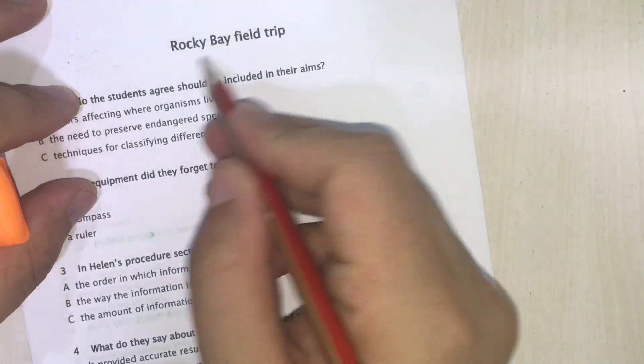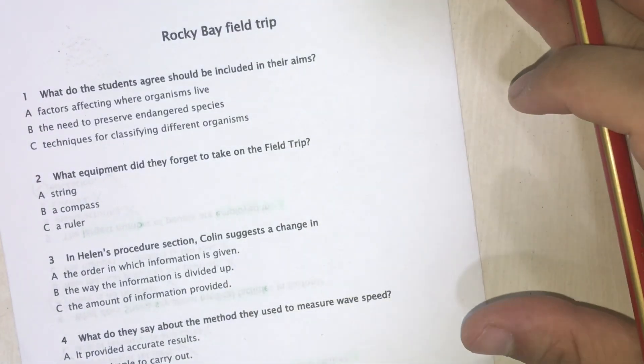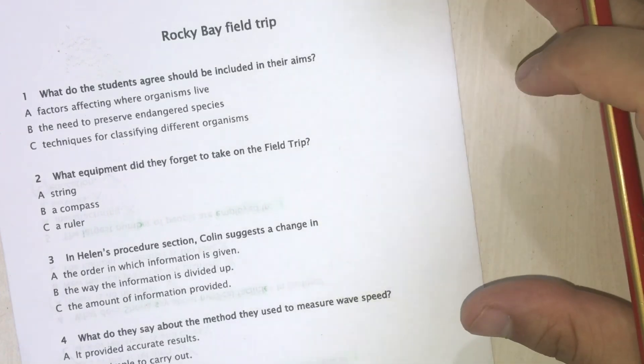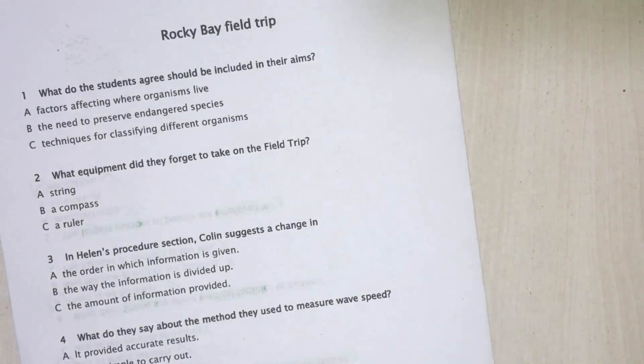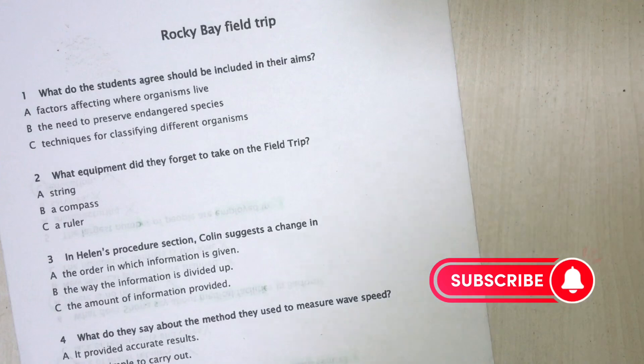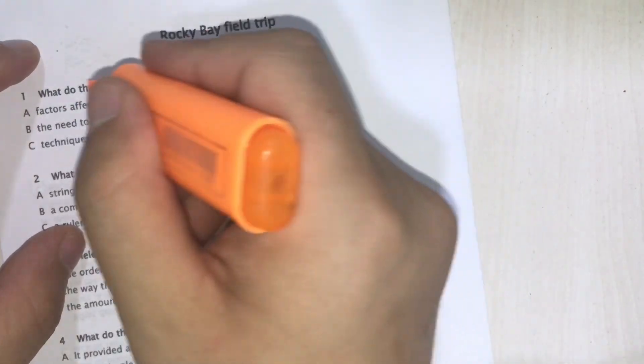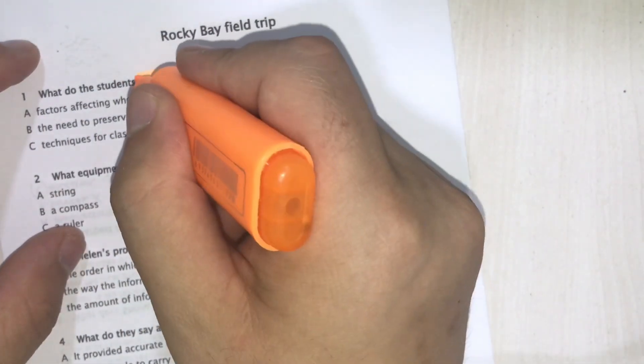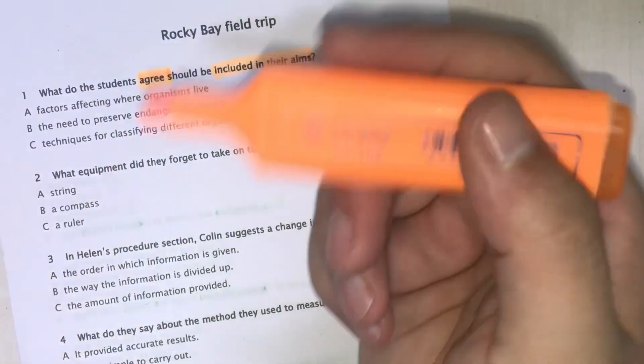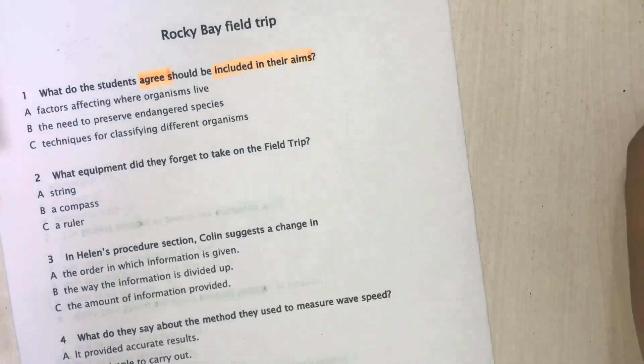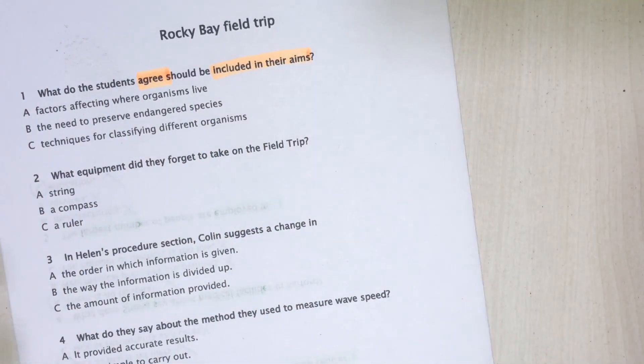So we have here Rocky Bay field trips. The first one provides 30 seconds to think about it, but it may take longer for me to show you as an example. I'll pause every time and show you how it's done. First, what do students agree should be included in their aim? Factors affecting where organisms live, the need to preserve endangered species, or techniques for classifying different organisms.